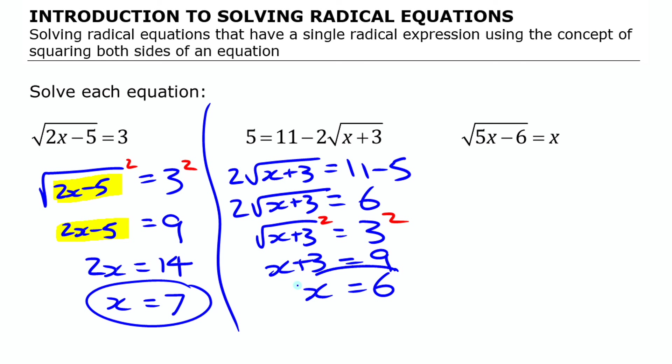Now if I check it by subbing it in for the x, we'll do this mentally. If I put the 6 in here, this is going to be 9. Square root of 9 is 3. 3 times 2 is 6. And 11 minus 6 is 5. So that one works. Let's do this third one here.